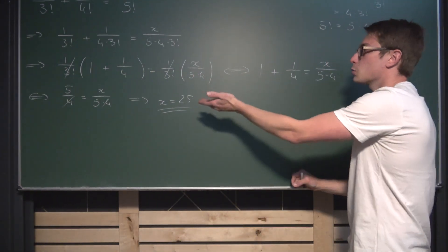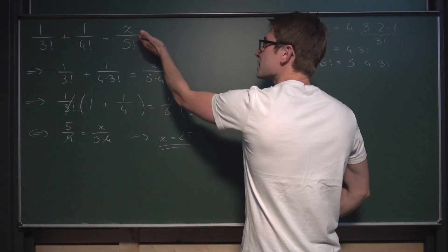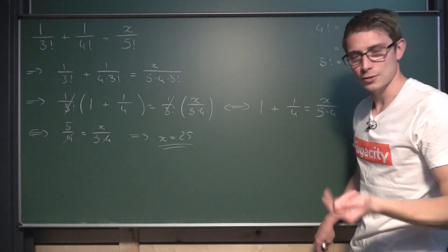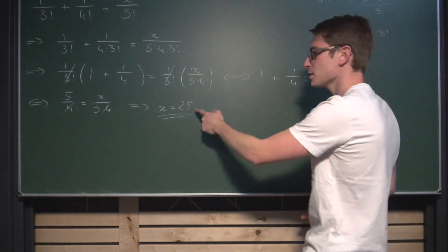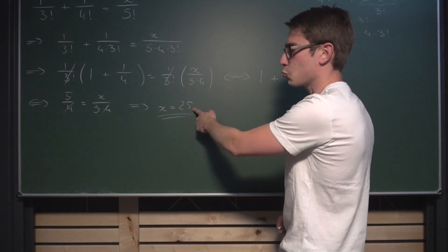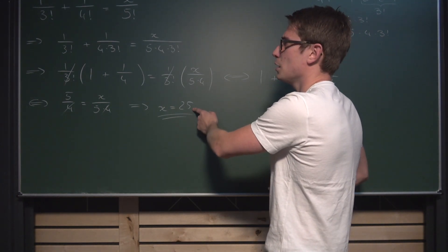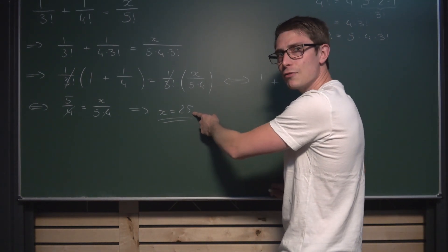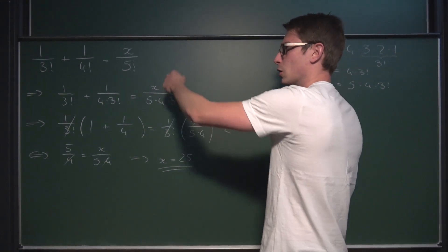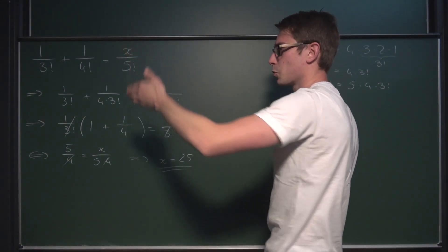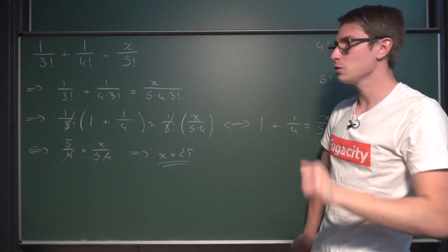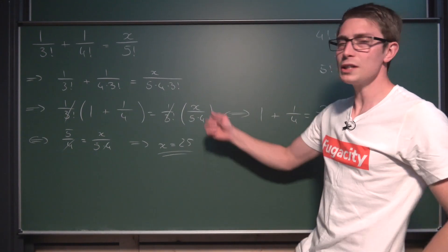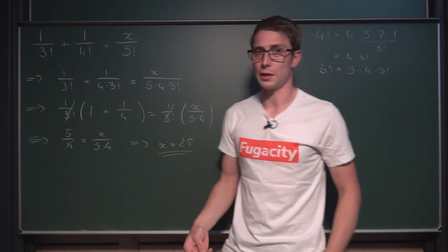25 satisfies what we got right here. And do you know what the cool thing about 25 is? It's a square — 5 squared. Now, do squares have anything in common with this problem at all? Let us take a look at the generalization.